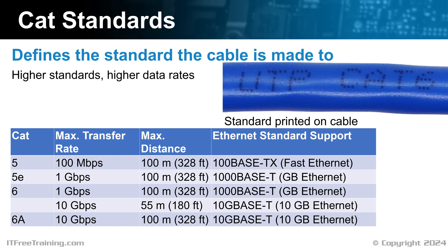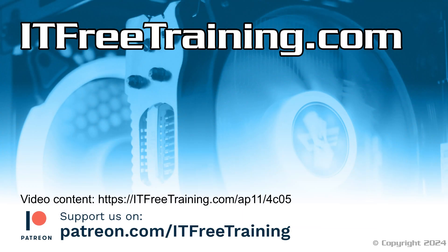Understanding copper cables is straightforward for most practical purposes. In real-world scenarios, you're likely to choose UTP cables for standard office computer setups. In environments with higher levels of interference, STP cables are preferable, and they're also often used in data centers for enhanced reliability. The primary decision you'll need to make concerns the category of the cable, which determines the data transmission speed and bandwidth capabilities — a choice crucial to ensuring your network meets both current and future connectivity needs. That concludes this video on copper cables. I hope you found it informative, and thank you for watching.